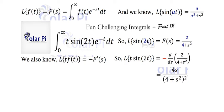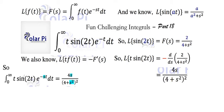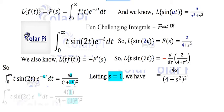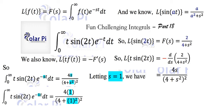By the definition of the Laplace transform, L{t·sin(2t)} equals the integral from 0 to infinity of t times sine 2t times e to the negative st dt. We've shown this equals 4s over s squared plus 4 squared. Now we just set s equal to 1, and this integral becomes exactly the original integral we're trying to solve. Substituting s equals 1 gives us 4 times 1 over 1 plus 4 squared, which equals 4 over 25.